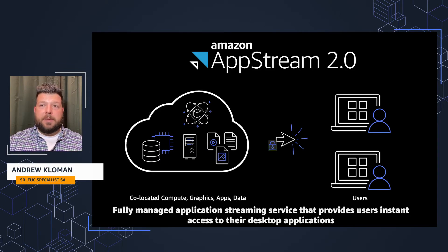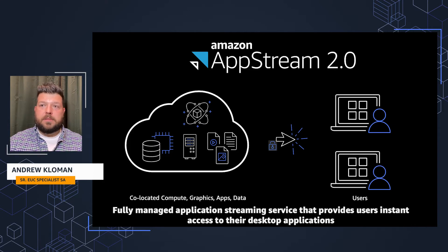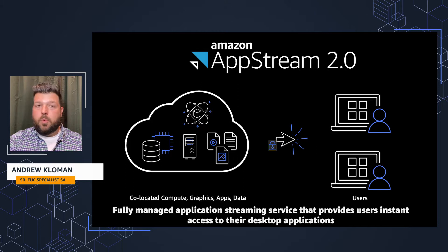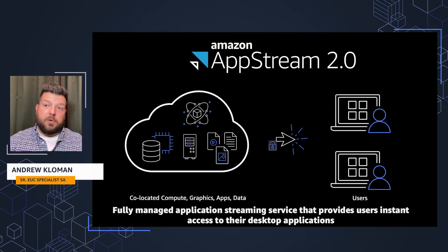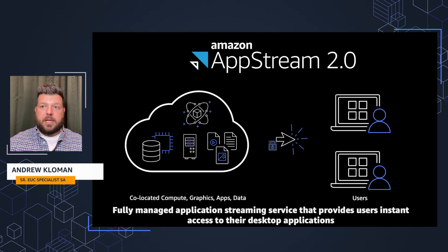Amazon AppStream 2.0 is a fully managed application streaming service that provides users instant access to their desktop applications. Apps and data are co-located in AWS, and only encrypted pixels are streamed across the wire. Users get individual virtual machines — it's a one-to-one mapping. One user logs in and is only associated with that one virtual machine instance, never shared with another user, which means performance is never affected by other users. Users can access applications via an HTML5 browser or a Windows client application.